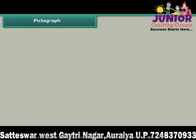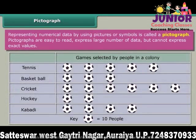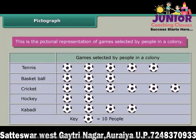Pictograph. Representing numerical data by using pictures or symbols is called a pictograph. Pictographs are easy to read, and can express large numbers of data, but cannot express exact values. This is the pictorial representation of games selected by people in a colony.